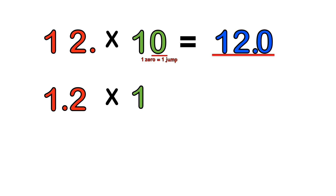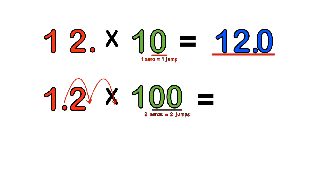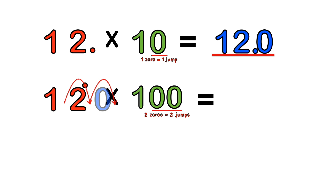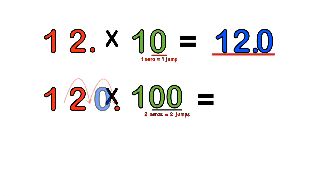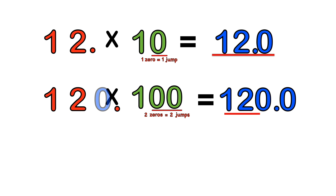What if we did 1.2 times 100? Count how many zeros we have. Since we have two zeros, that equates to two jumps to the right. We make one jump and then another jump. Since that second jump is a blank, we replace it with a zero — every blank jump we fill in with a zero. If it jumps over nothing, that means it jumps over zero. So 1.2 times 100 equals 120.0.